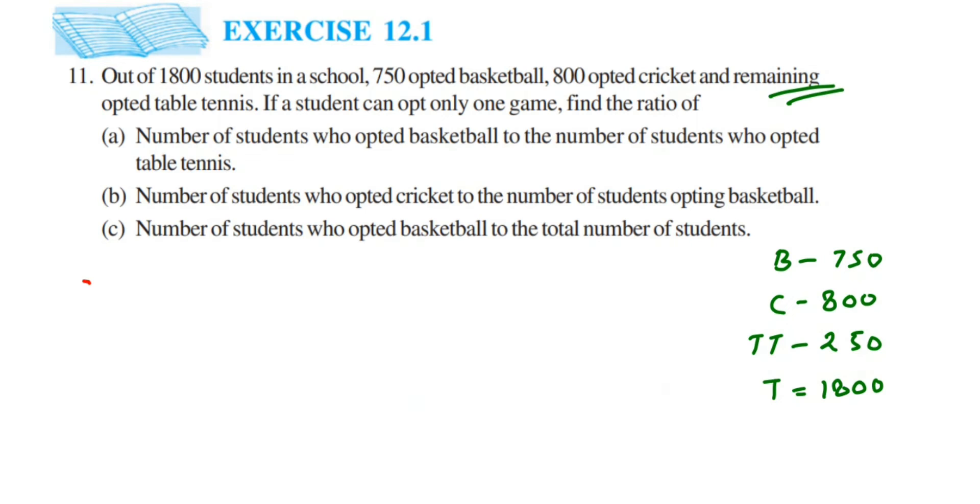Now let's start the first question. In the first question, number of students who opted basketball to the number of students who opted table tennis. So basketball is 750 is to table tennis is 250. Here I'm not writing down the statement, you can write down the statement in your exams or in your notebooks.